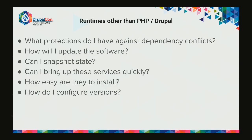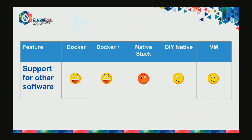If thinking about Node: what protections do I have against dependency conflicts? Can I run NPM in that environment? Can I snapshot the state of that non-Drupal environment? Can I bring these services up quickly? The scorecard: on a native stack it's nigh impossible - there's no good corresponding double-click install for NPM. DIY with Brew is possible but gets messy. The problem with VMs is that people end up using multiple VMs, creating a very heavy system, especially running multiple Drupal and Node instances.